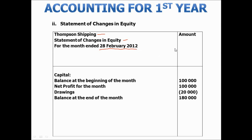As the name states, the statement of changes in equity shows us the transactions that affect equity in the business, which in summary would include capital, net profit which we received from the income statement, and then drawings which is a negative impact on capital.